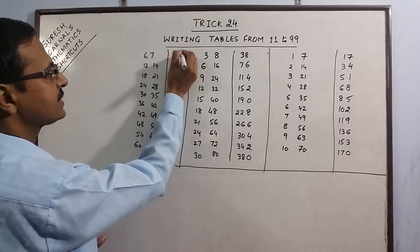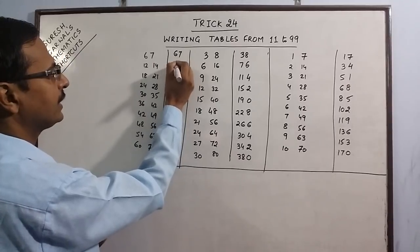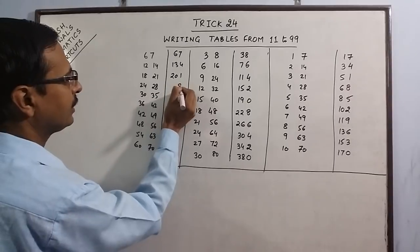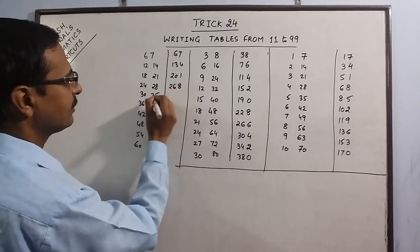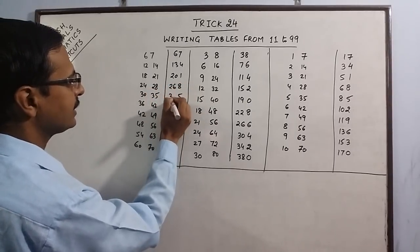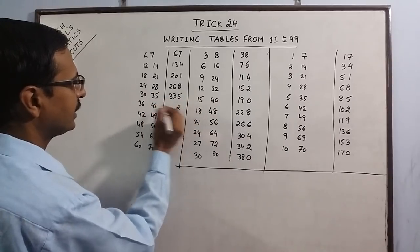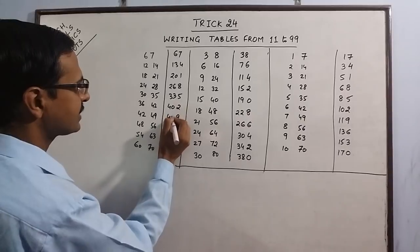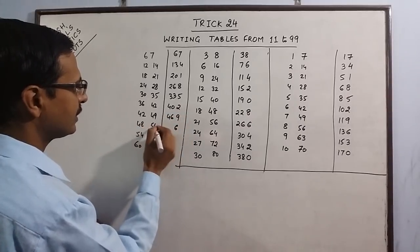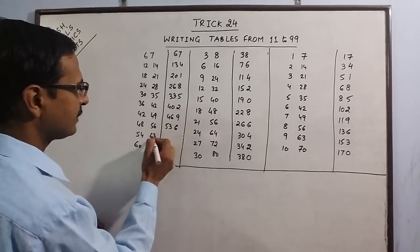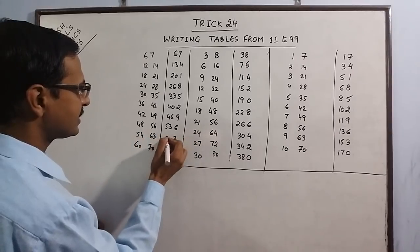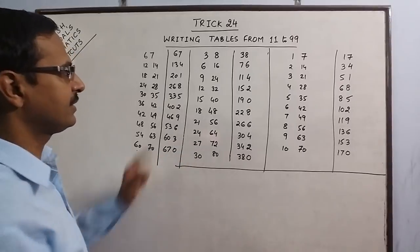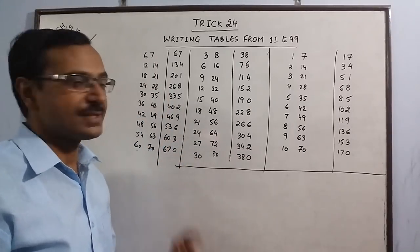Continue the method for 67: unit digit 4, 12 plus 1 is 13; unit digit 1, 18 plus 2 is 20; unit digit 8, 24 plus 2 is 26; unit digit 5, 30 plus 3 is 33; unit digit 2, 36 plus 4 is 40; unit digit 9, 42 plus 4 is 46; unit digit 6, 48 plus 5 is 53; unit digit 3, 54 plus 6 is 60; unit digit 0, 60 plus 7 is 67. This is the table of 67.